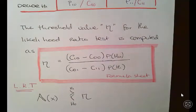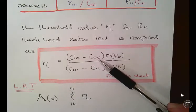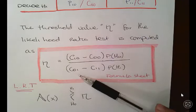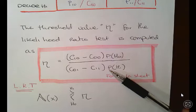So the threshold equals C10 minus C00 over P(H0) divided by C01 minus C11 times probability of H1.